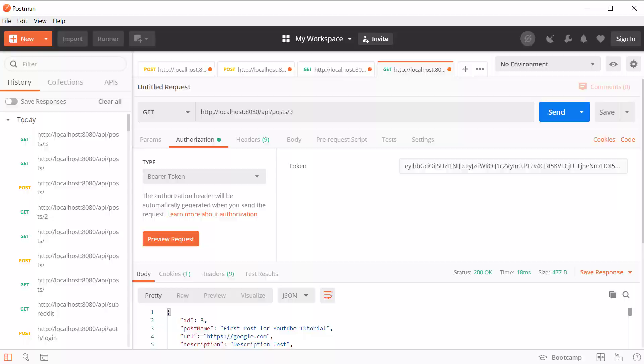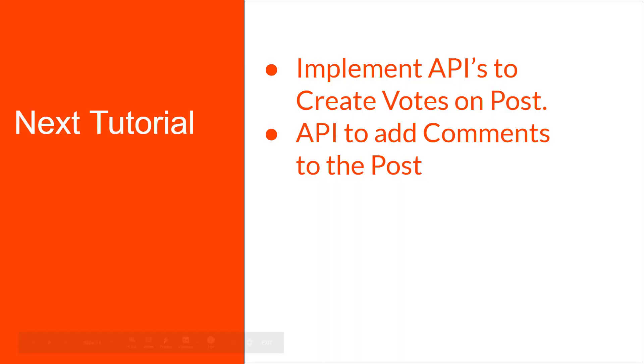So this is it for this tutorial. In the next tutorial, we are going to create the functionality to vote on posts and also to comment on posts. We are quickly coming to the end of the backend functionality. Once the backend API is completed, we can go ahead and start building the frontend of this application using Angular. I hope these videos are helpful to you — please don't forget to like, share, and subscribe to my channel for more tutorials like this.